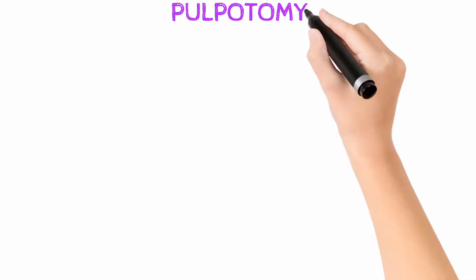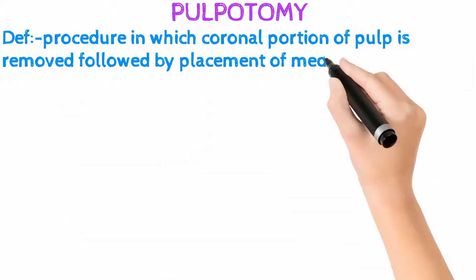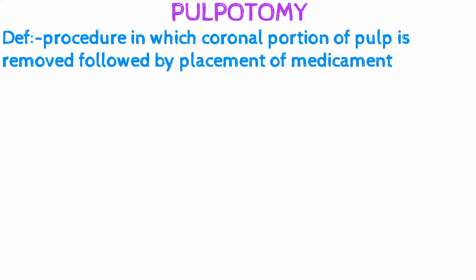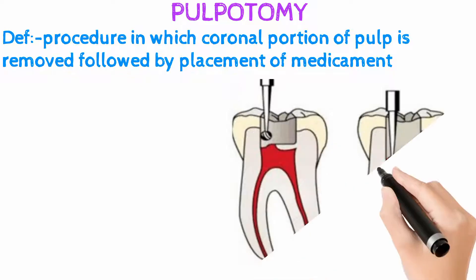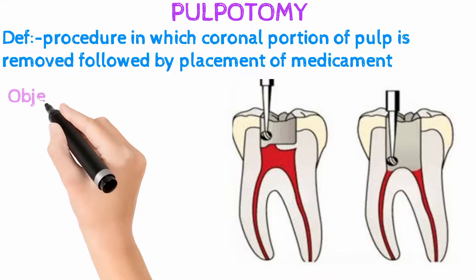Pulpotomy is defined as a procedure in which the coronal portion of the pulp is removed, followed by placement of a medicament. Look at the picture here — only the coronal portion of pulp is removed and the radicular portion is preserved.